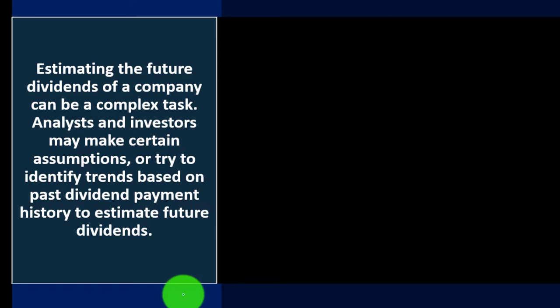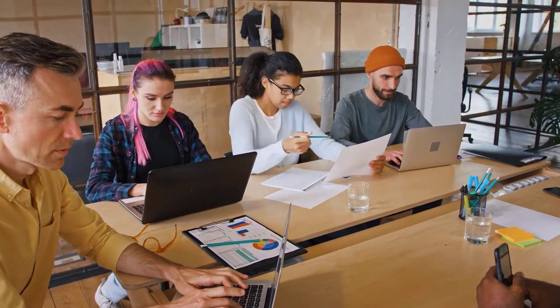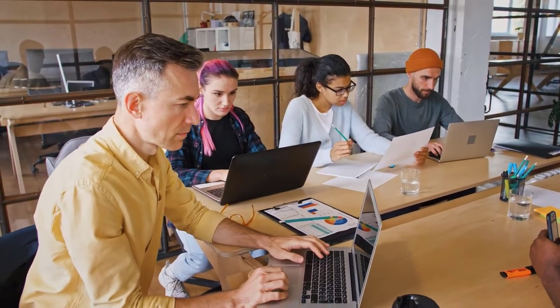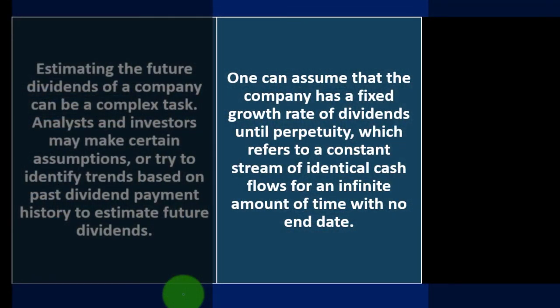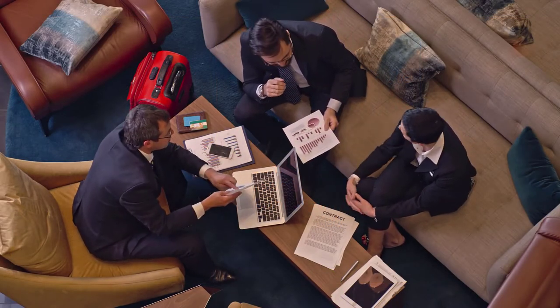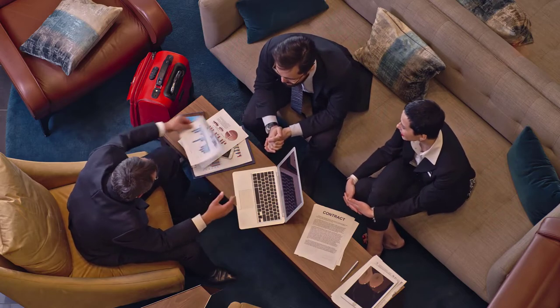Estimating a company's future dividends can be a complex task. Analysts and investors may make certain assumptions or try to identify trends based on past dividend payment history. One approach is to assume the company has a fixed growth rate of dividends in perpetuity — a constant stream of identical cash flows for an infinite amount of time. For example, if a company is growing you might assume dividends increase at a fixed rate until the company caps out, at which point it becomes established and pays a fixed dividend that won't change much.